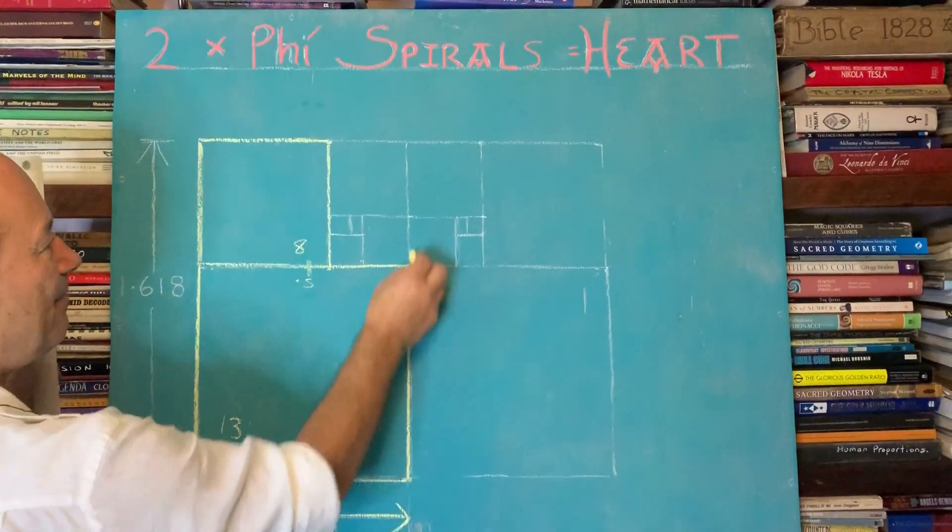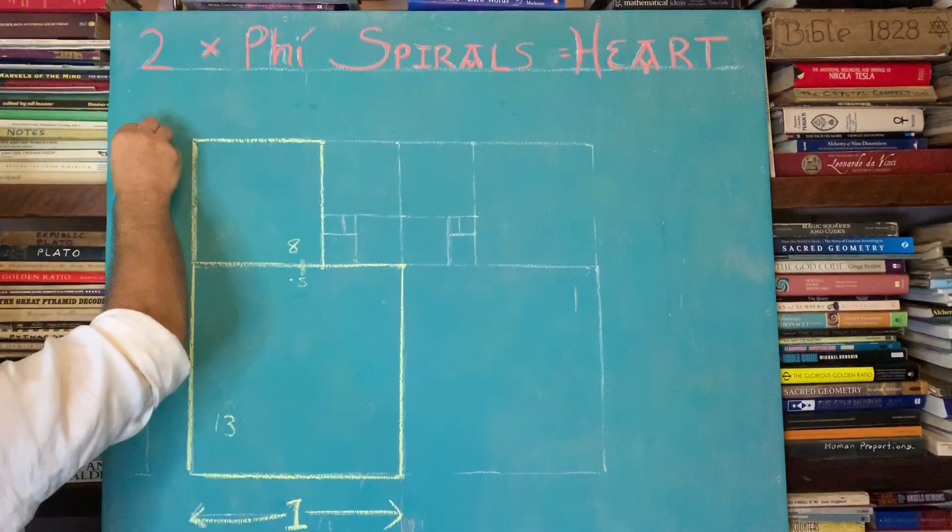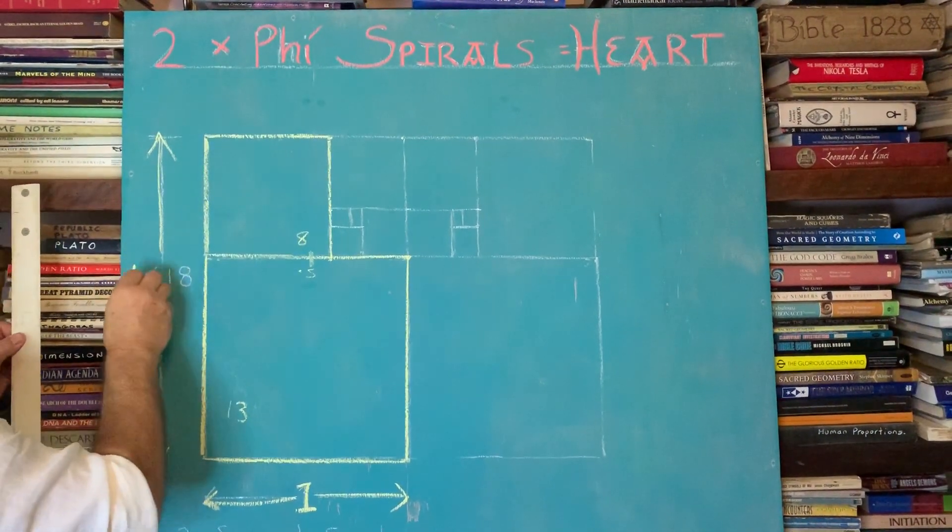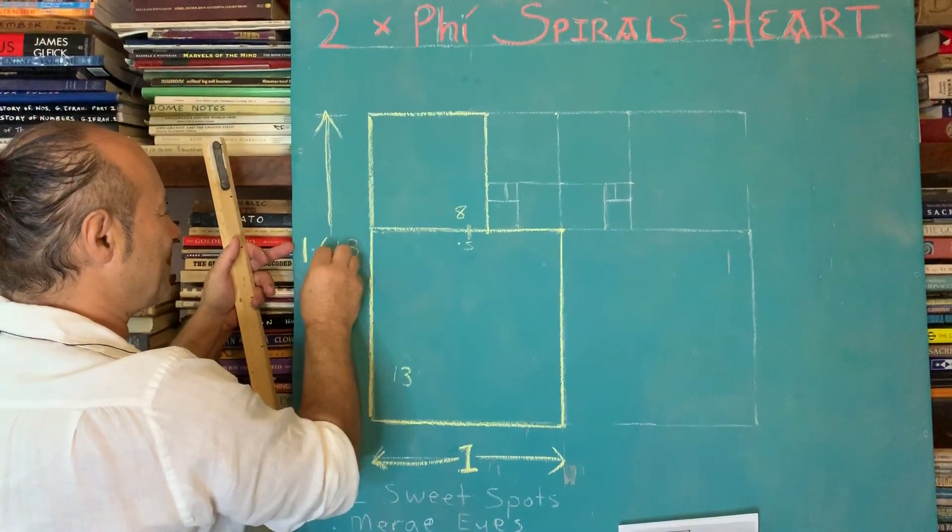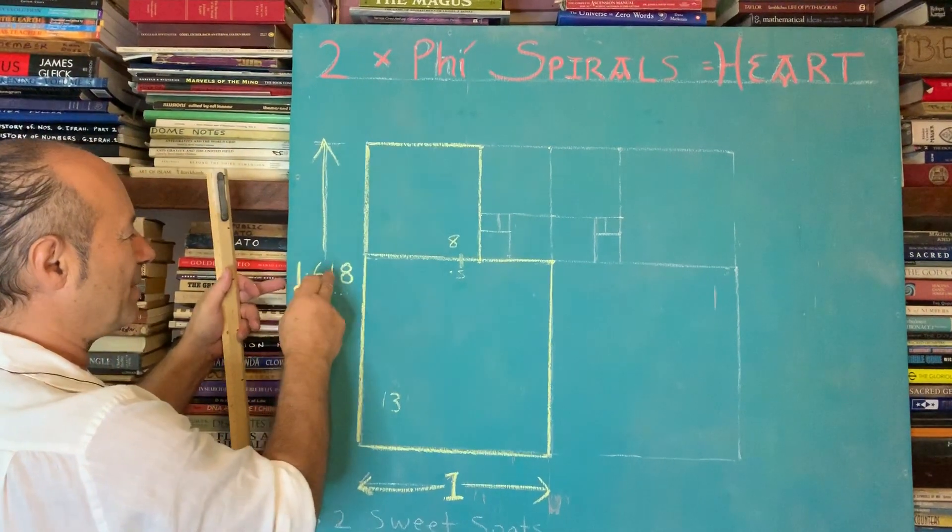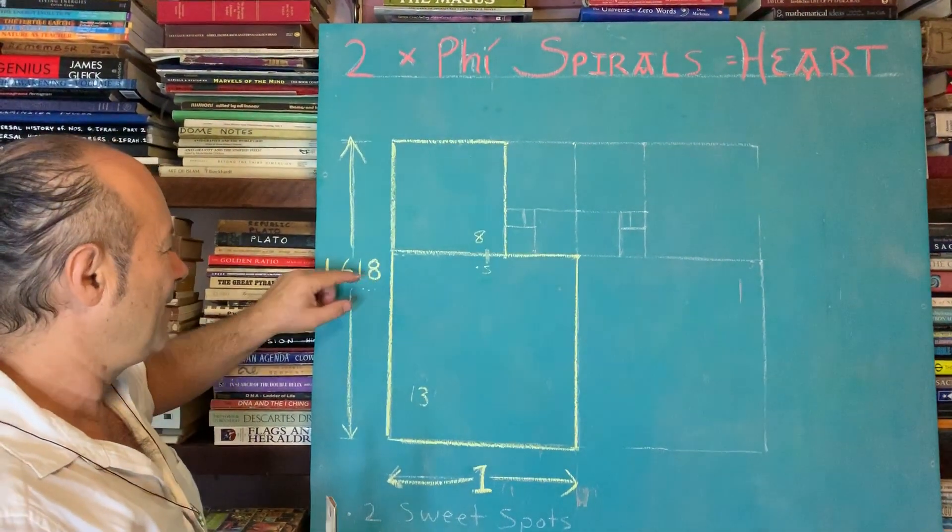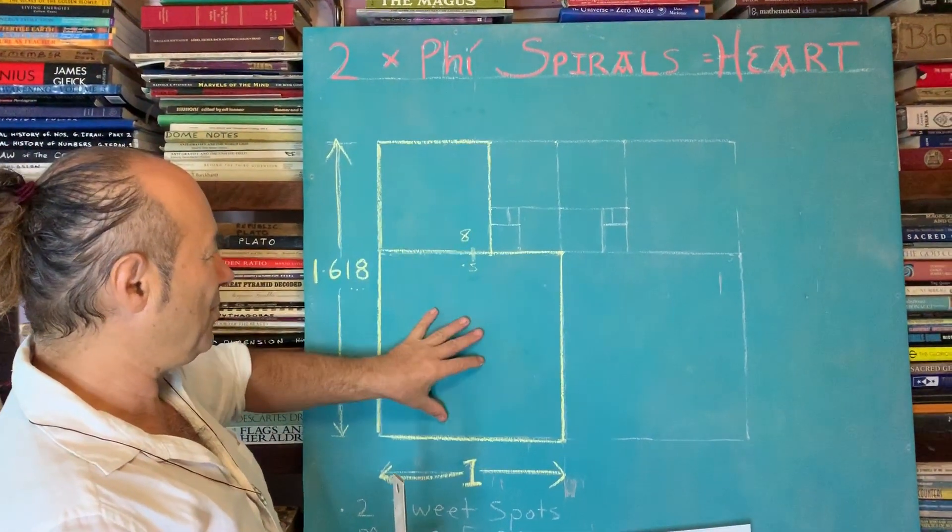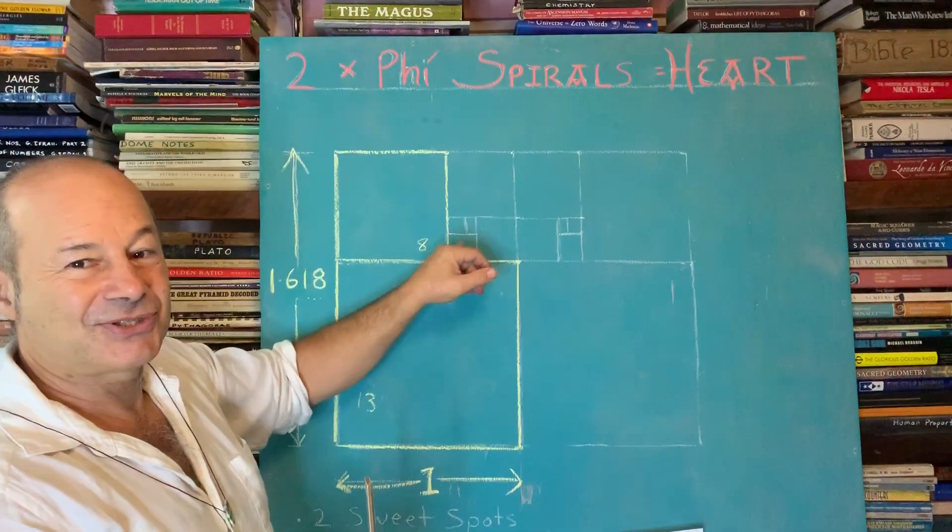So now we have a golden rectangle. If this is one, this whole distance, the long length, is 1.618. It goes 1.618 03988 forever. The golden ratio is not a number, it's actually a relationship. 13 is to 8, then 8 is to 5, then 5 is to 3, and 3 is to 2.